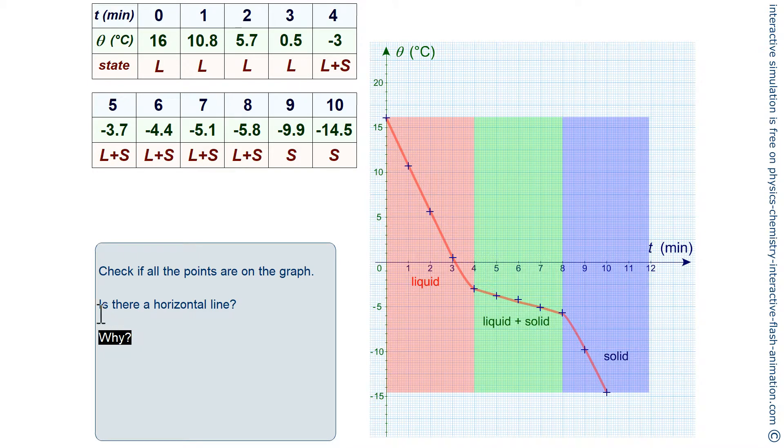So, can we talk about a horizontal line? We can see here that even if the curve has changed slope, we don't really have a horizontal part. The question is asked here: is there a horizontal line? So the answer is no. This is because we are working with a mixture. That's the difference with a pure substance.